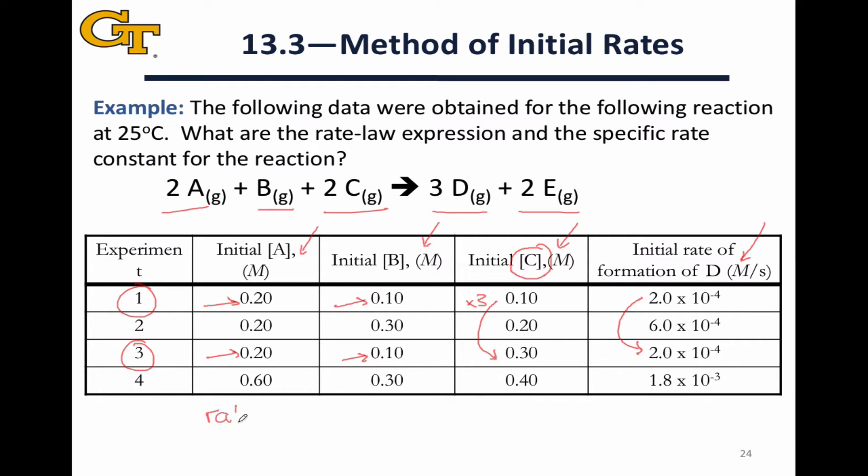The idea is to set up a ratio of the two. The initial rate for run 3 divided by the initial rate for run 1 on the left-hand side, and then on the right-hand side, we're going to put the rate laws. The rate constant times the concentration of A to some power, let's call it M, times the concentration of B to some power, let's call it N, times the concentration of C to some power, let's call it P.